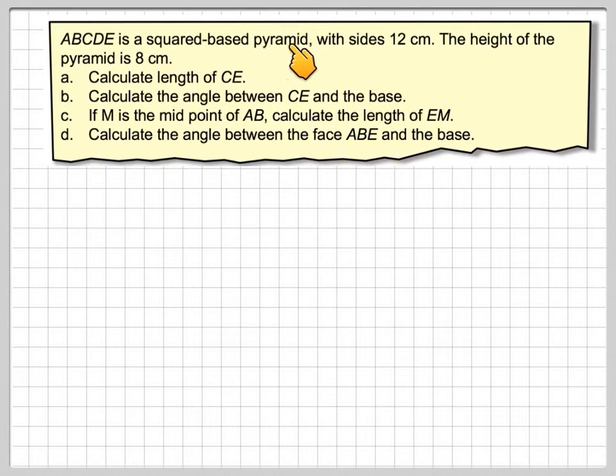ABCDE is a square-based pyramid with sides 12 centimeters. The height of the pyramid is 8 centimeters.